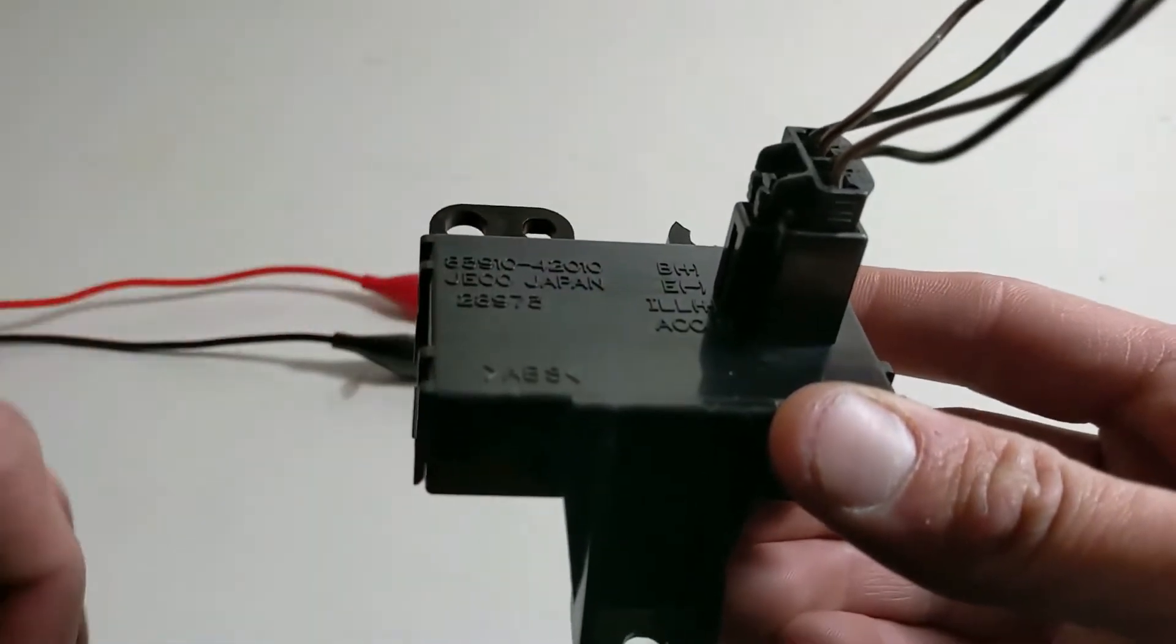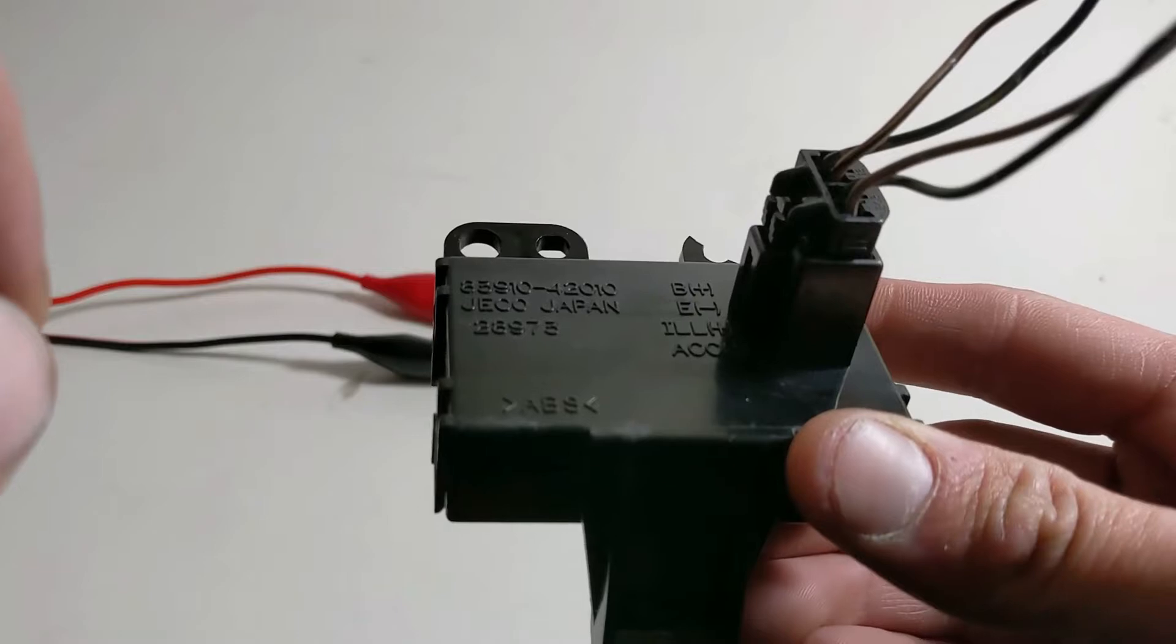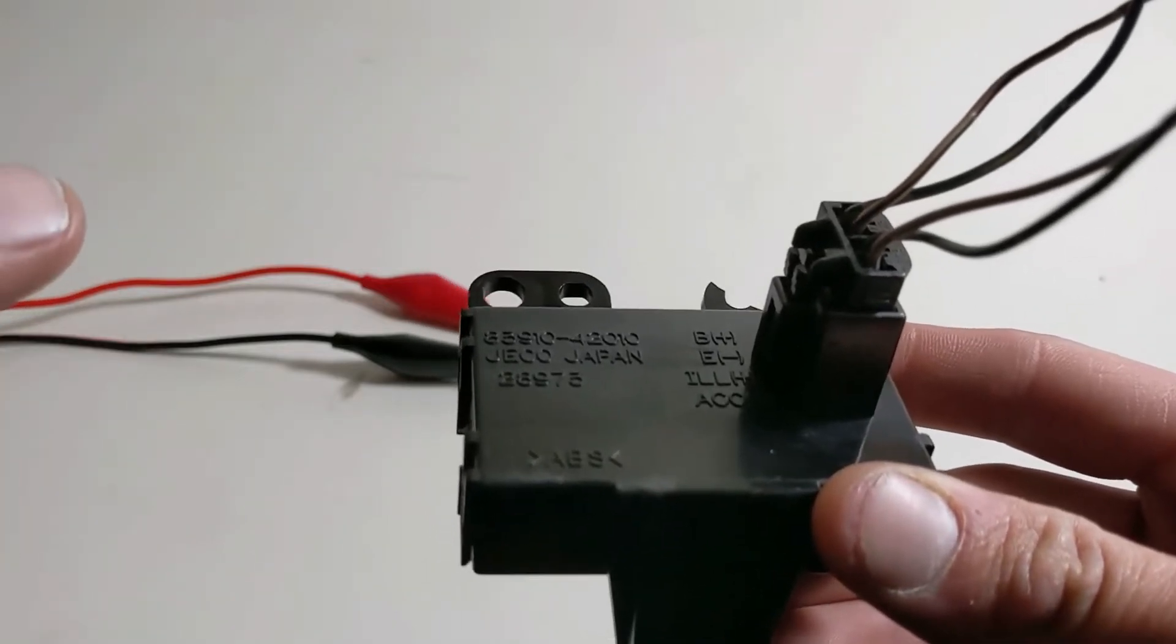Here we have ILL, that stands for illumination. Basically, this signal could be, for one, it could be wired to a potentiometer.